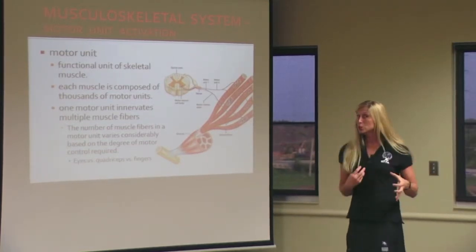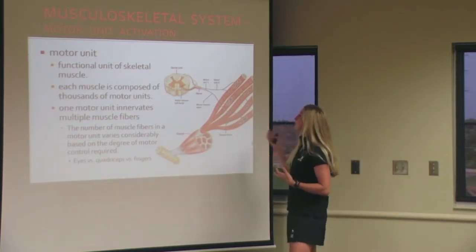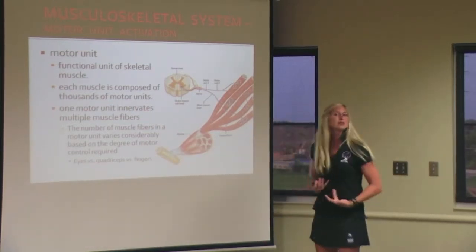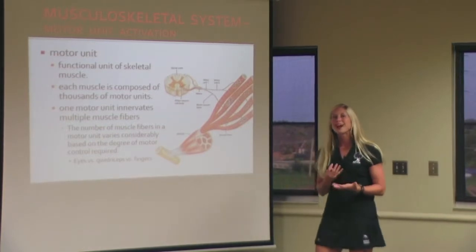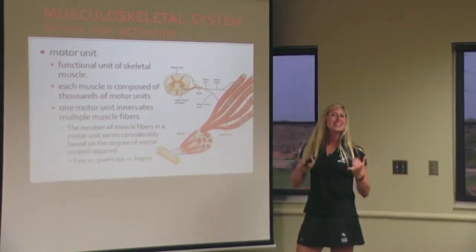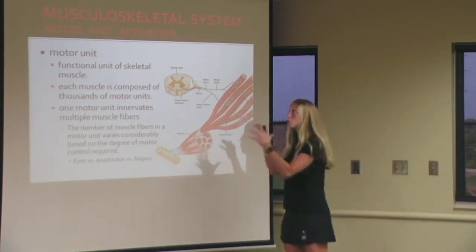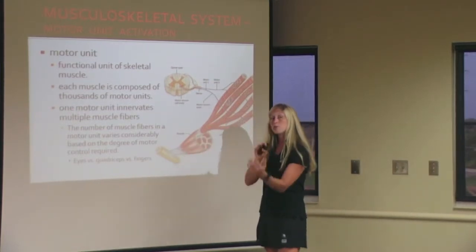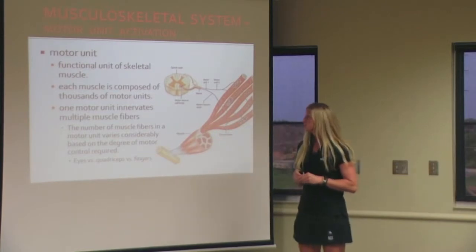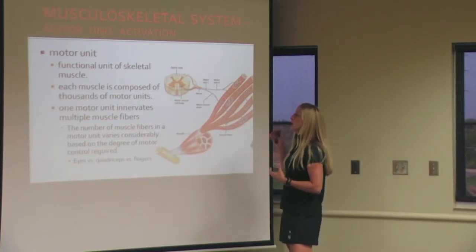Each muscle — each muscle head, each part of a muscle group — is comprised of thousands of motor units. The number of motor units is not proportional to the size of the muscle; it has to do with the function of that muscle. One motor unit will come in and innervate — that means supply those impulses to — multiple muscle fibers. There are lots of motor units per muscle, and how many muscle fibers are part of each motor unit depends on what their job is.